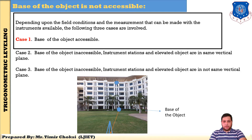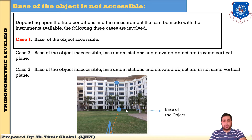Now, you have to find the height of the object. This is our object — you know that this is the LJ campus. You have set up the instrument there, and you know that this is the base of the object. So you can directly, using a chain or tape, find the horizontal distance between the instrument station and the base of the object. So you can directly reach the base of the object using tape or chain, and this field condition is called as the base of the object being accessible.